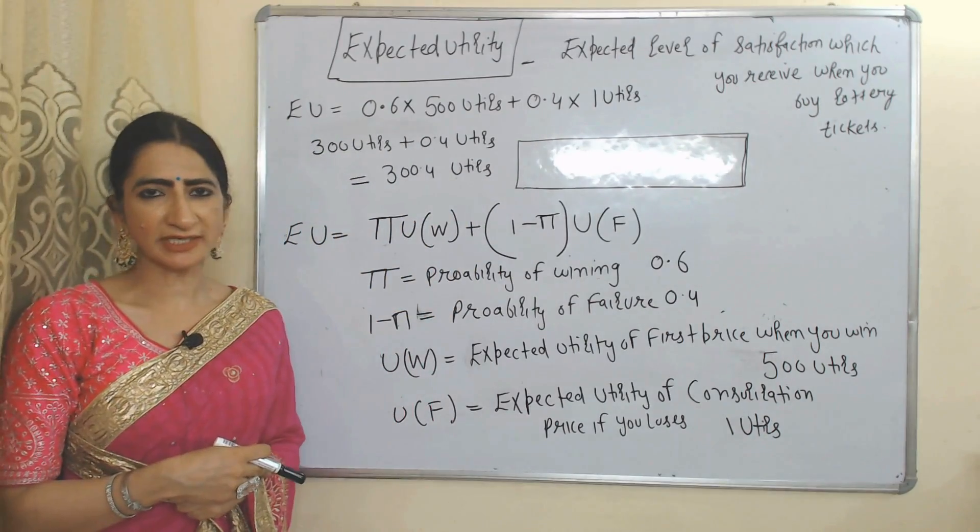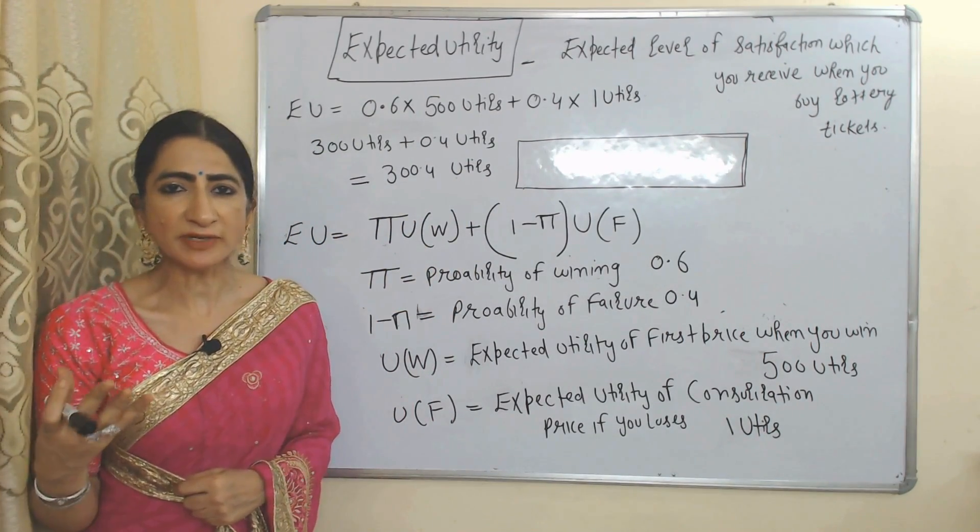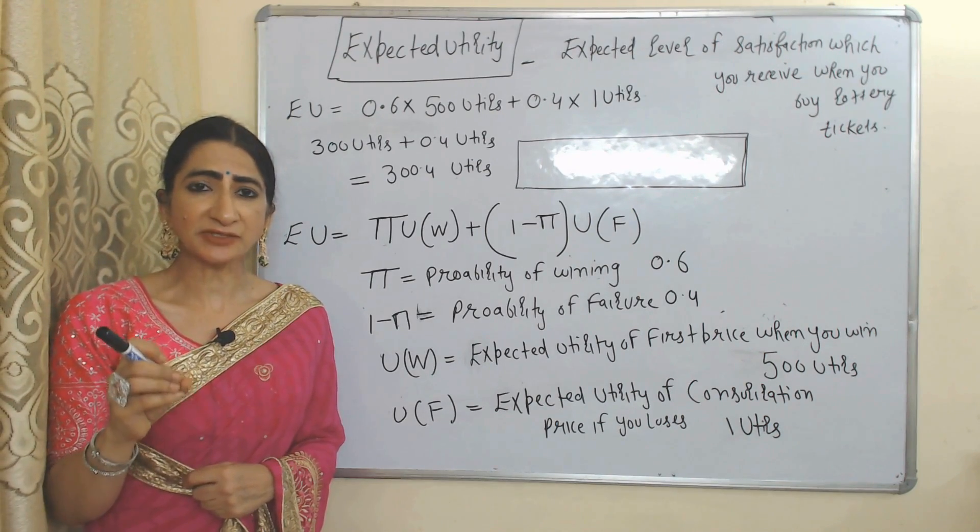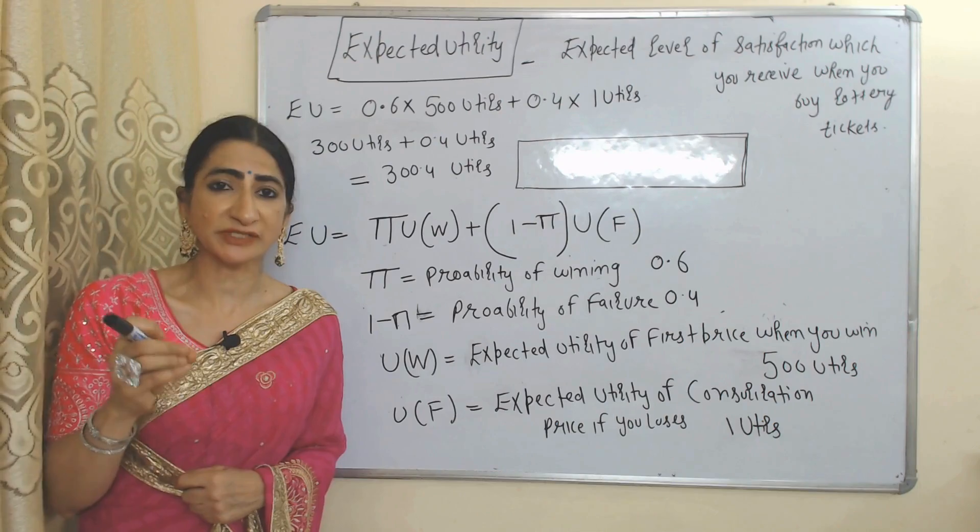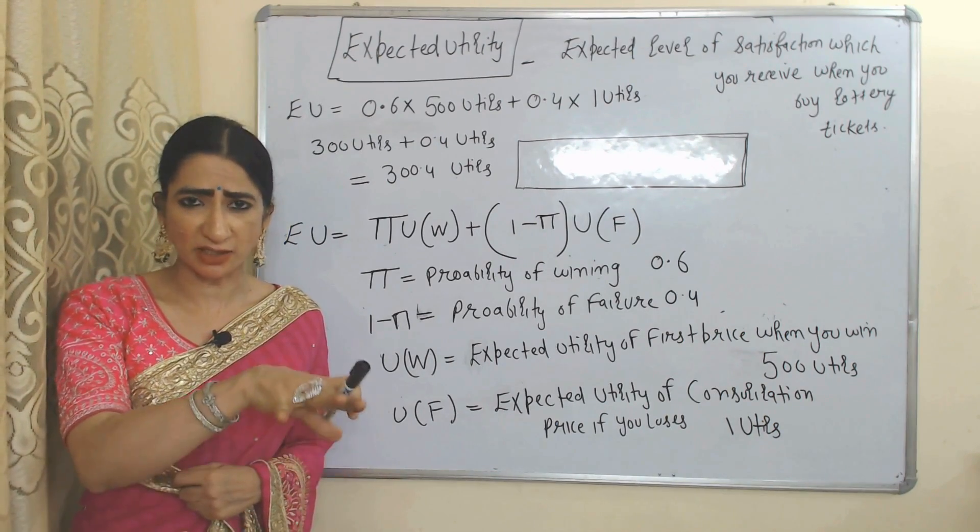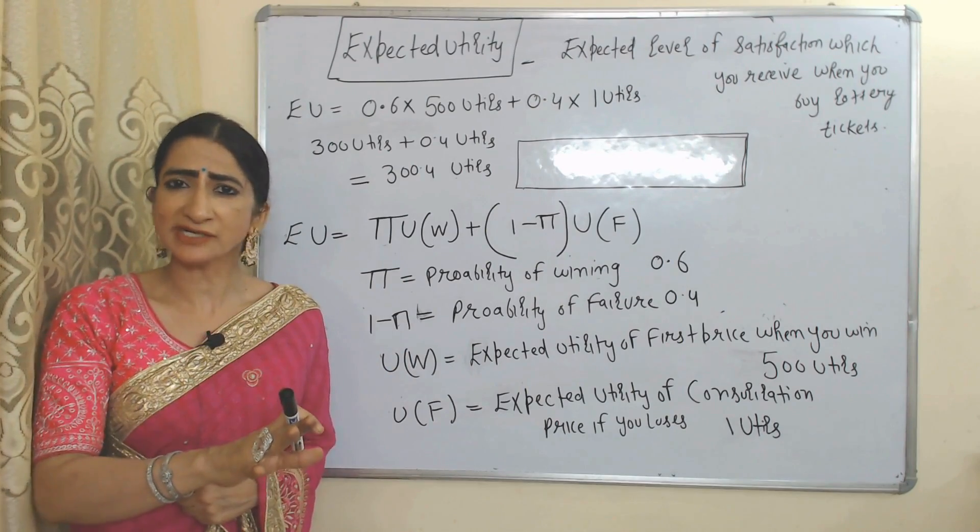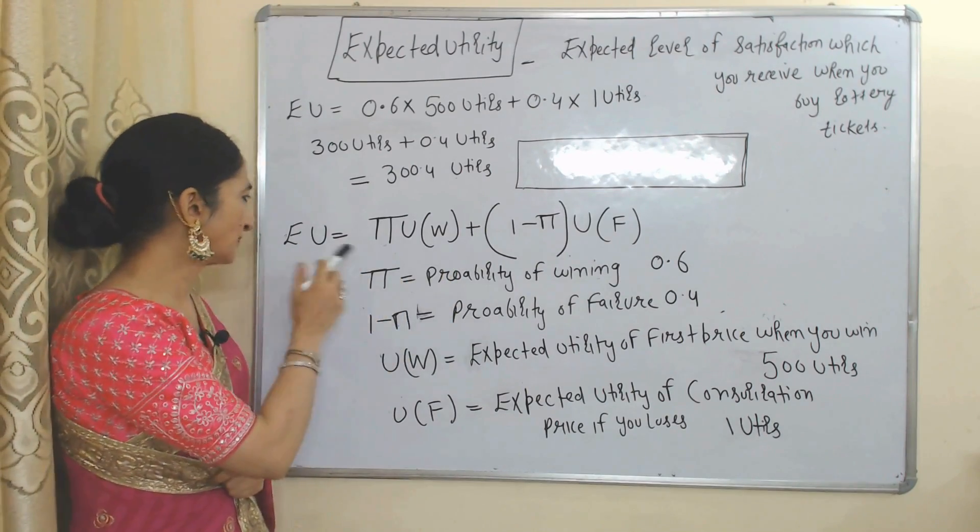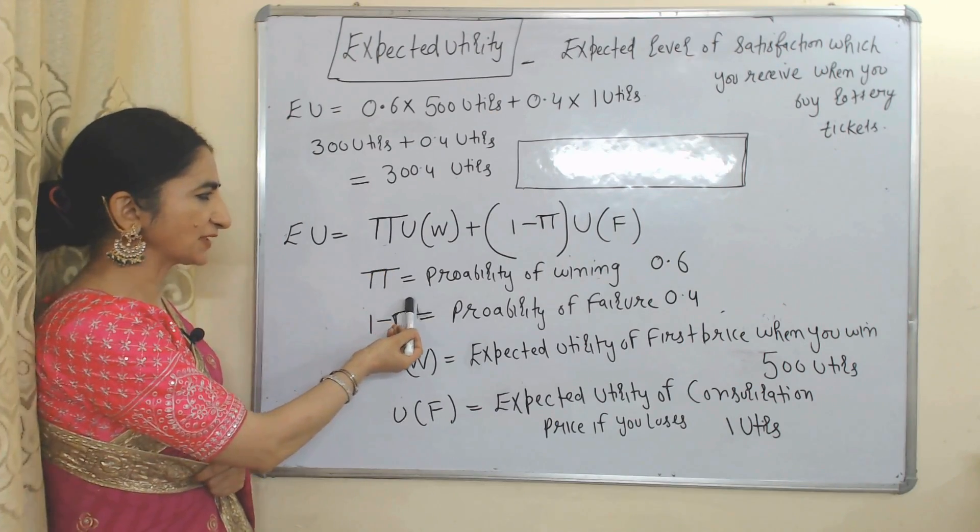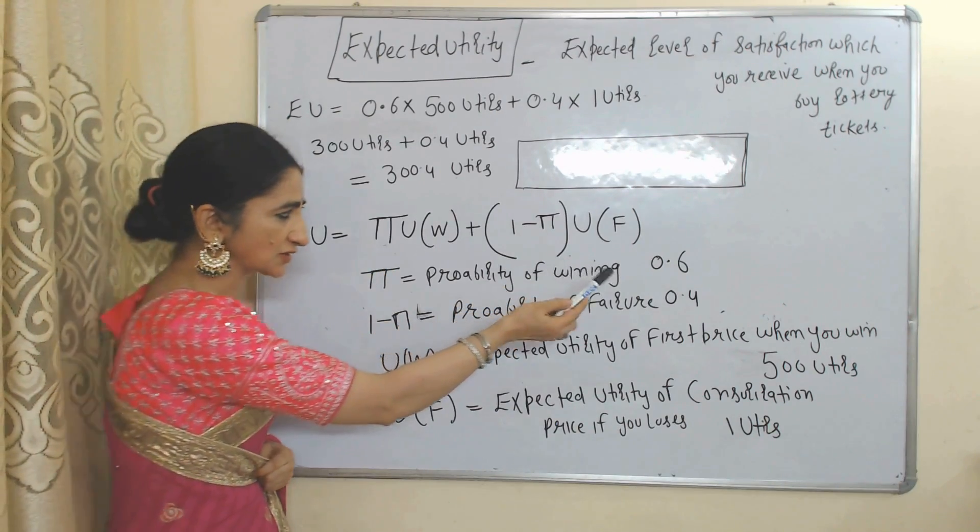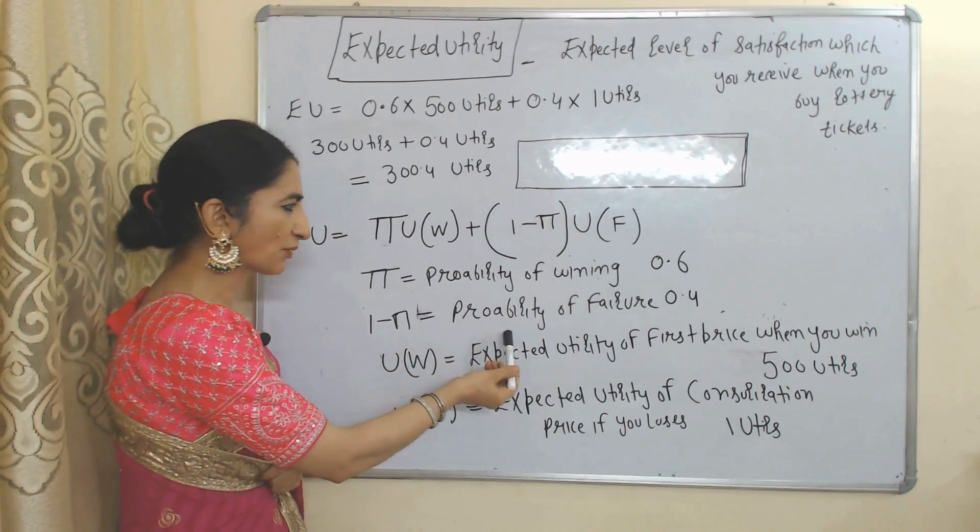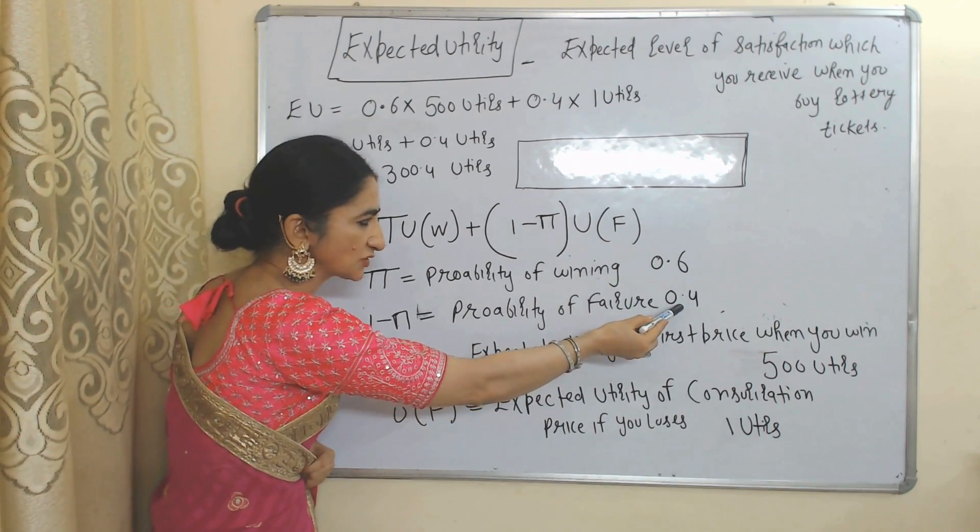We have already calculated expected monetary value. Now we will see the formula for calculating expected utility. Expected utility means expected level of satisfaction which you receive when you invest your money in any risky project or buy any lottery tickets. This is the formula: EU represents expected utility, and pi represents probability of winning which we assume equal to 0.6. One minus pi represents probability of failure which we assume equal to 0.4.